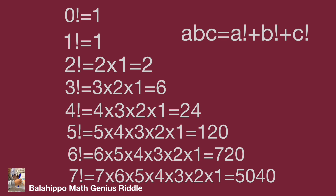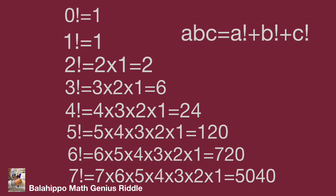Now, a, b, c is a three-digit number, and a, b, c equals a factorial plus b factorial plus c factorial. If any of a, b, or c is greater than 6, the factorial value becomes a four-digit number. So a, b, c should be less than 7. Next, checking 6!: 6! = 720, which means if one digit's factorial is 6!, the sum would produce a 7 in the hundreds. So a, b, c must each be less than 6.